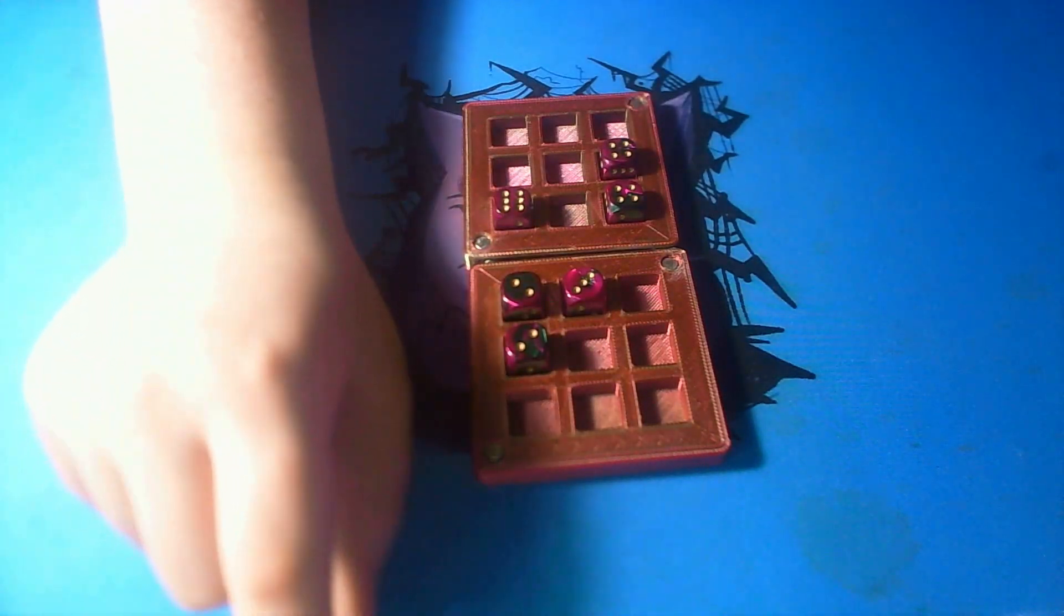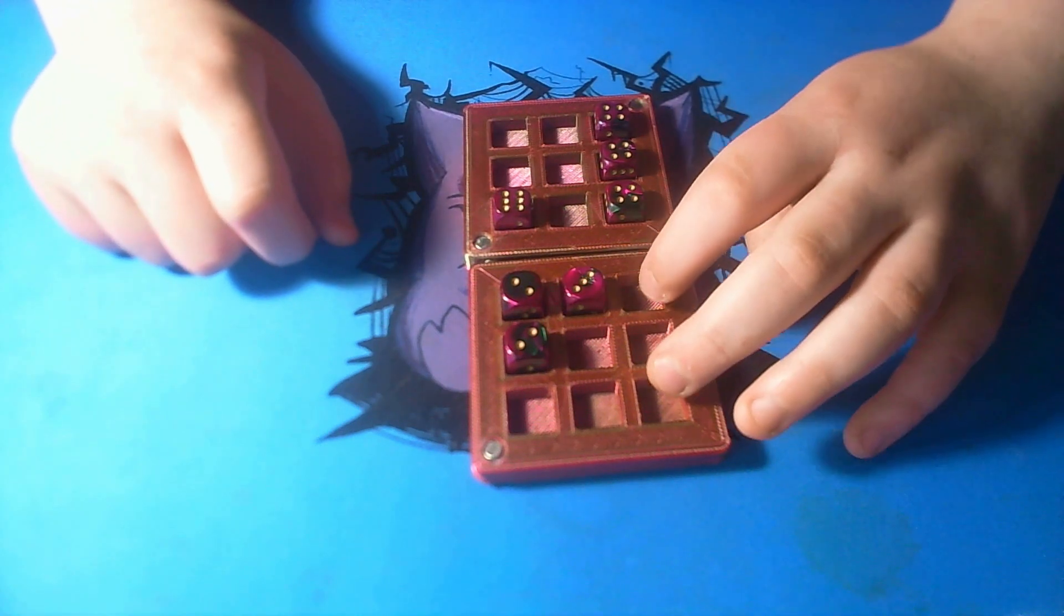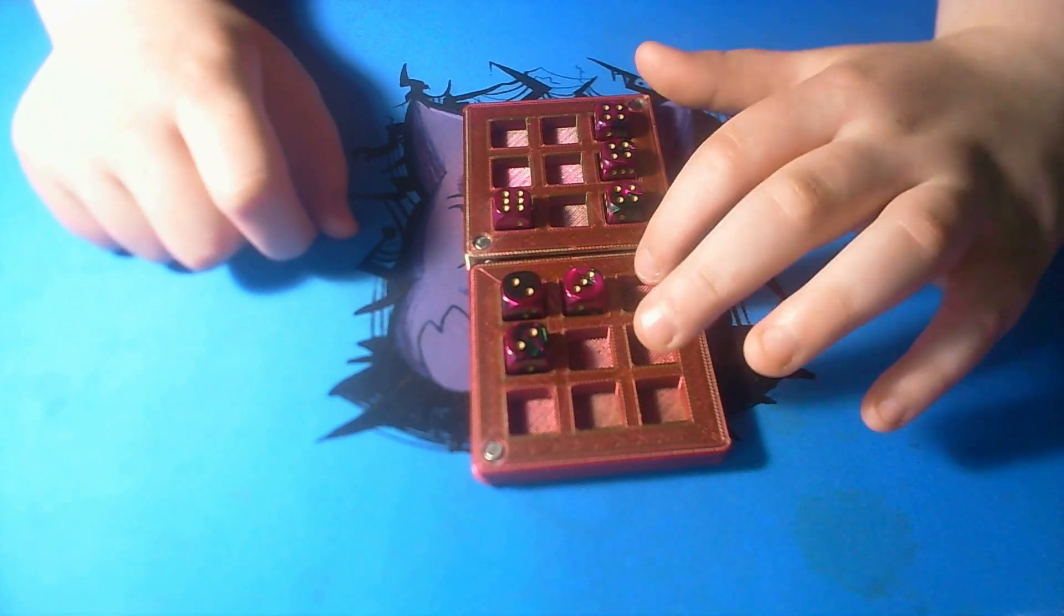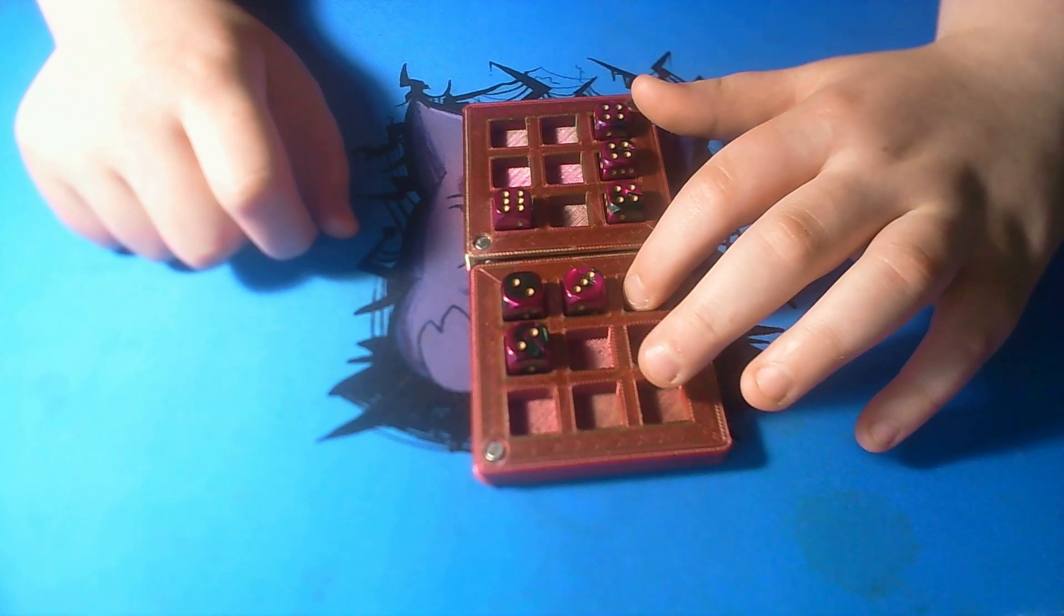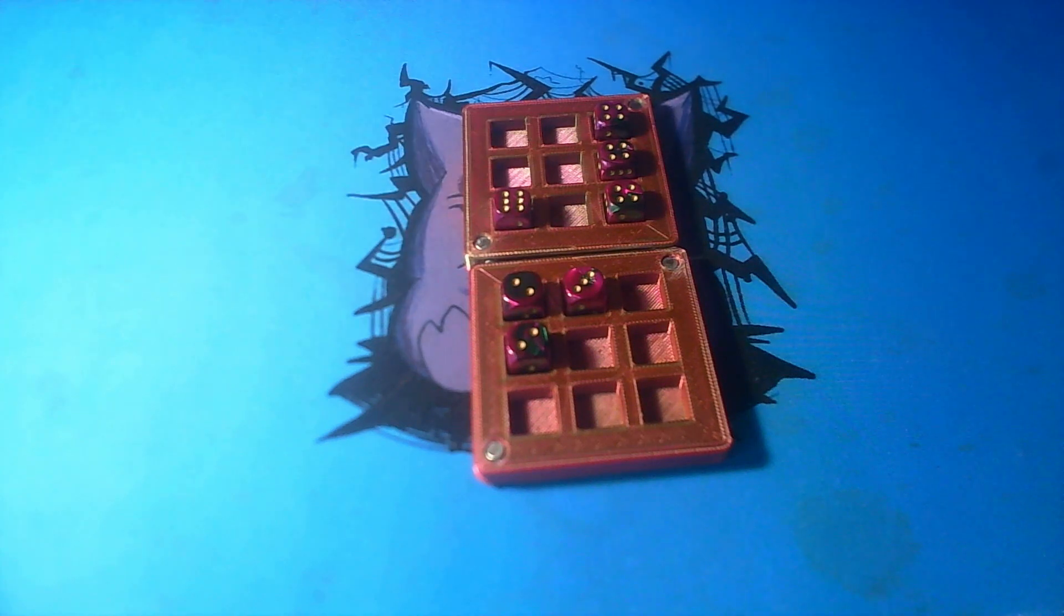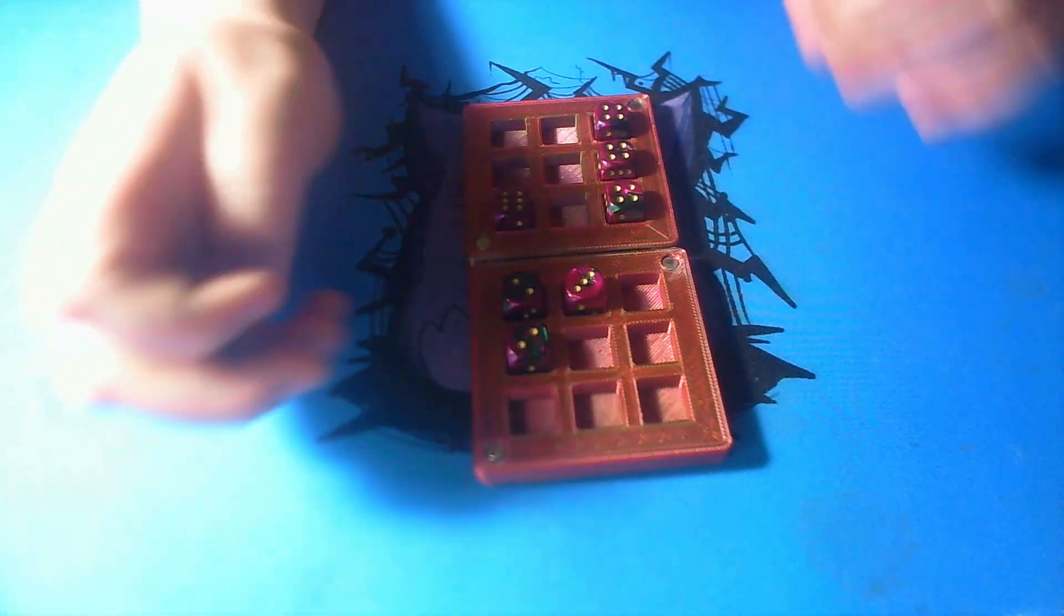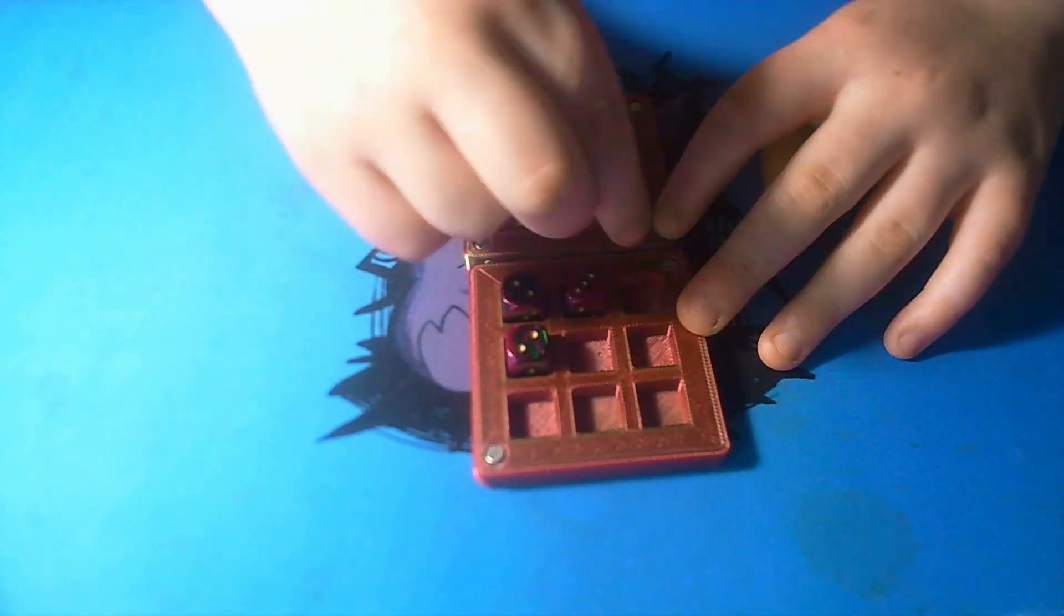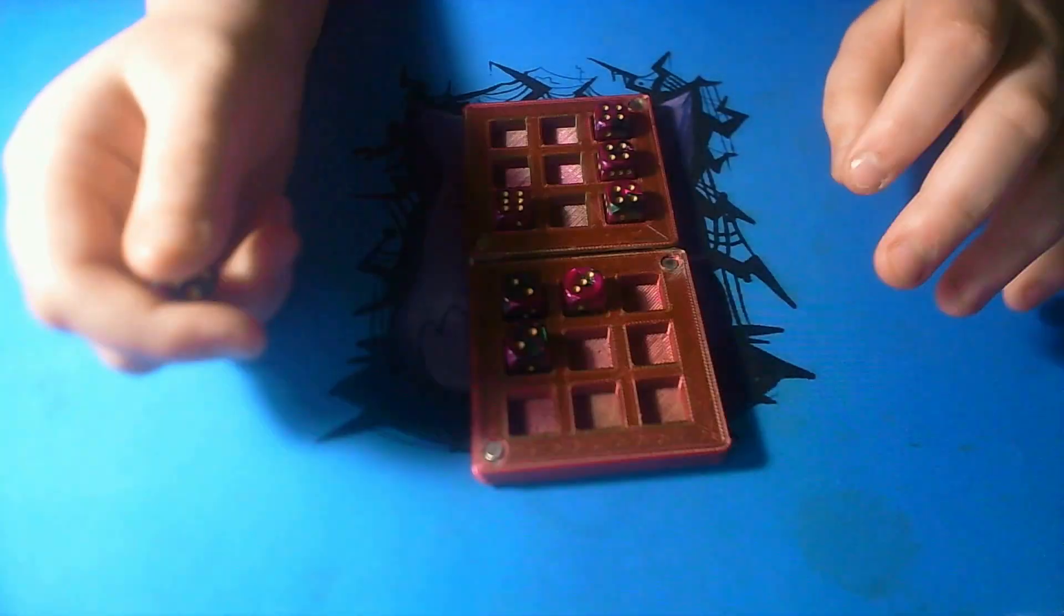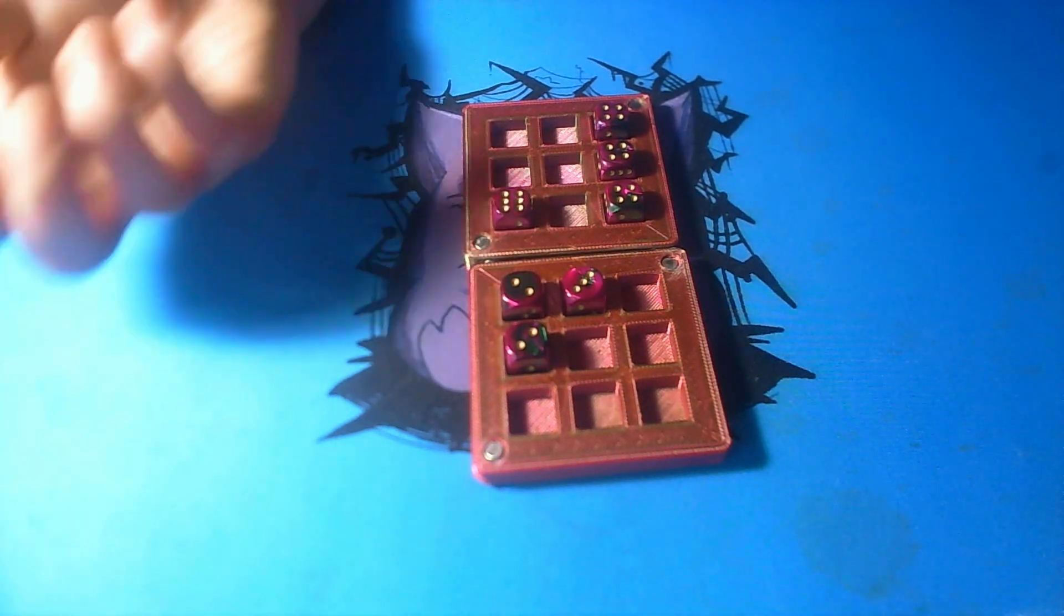I roll, it's a 4. Now if you roll 6s, you want to place them in this column, because I can't counter them and you have an upper hand. But when both of these get filled up, nothing can change. It's there for the rest of the game.